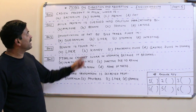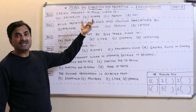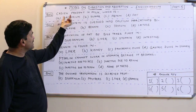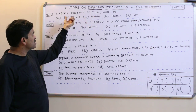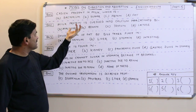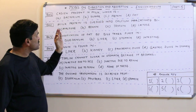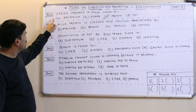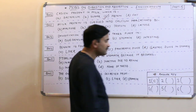Hello everyone. Today we are going to discuss some MCQs based on the digestive system — this is Part 5. The first question is: casein present in milk — is it a bacterium, sugar, protein, or fat? We must know that casein is a milk protein. So question number one has the answer C: protein.